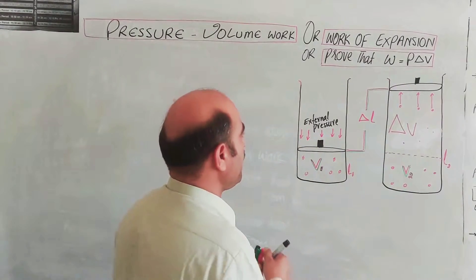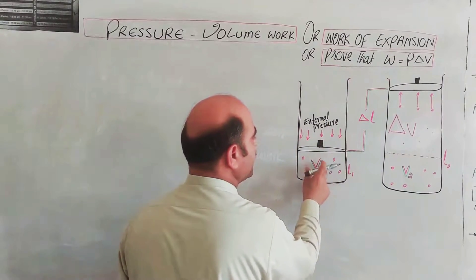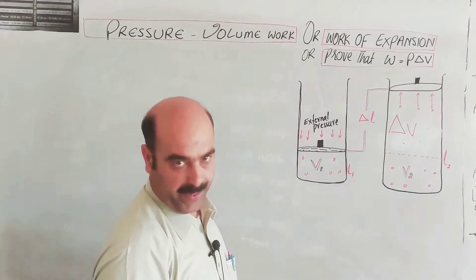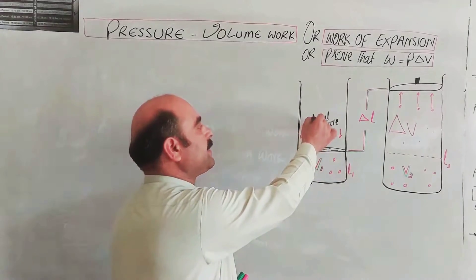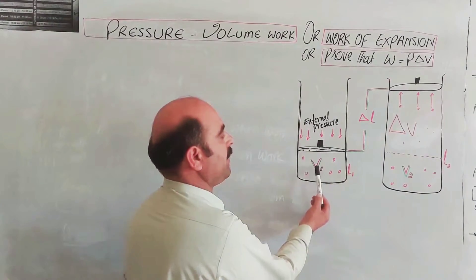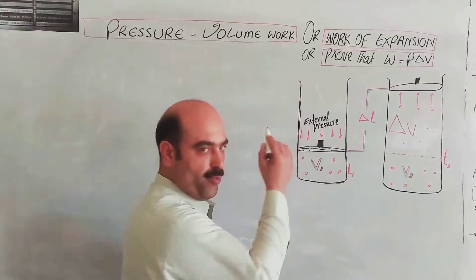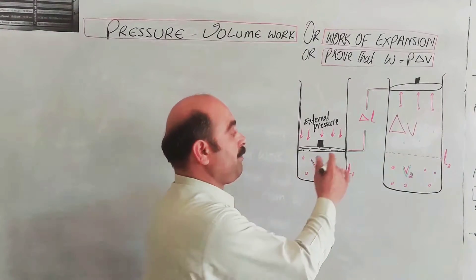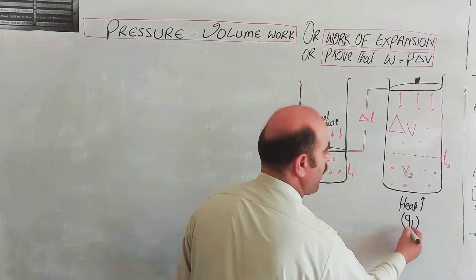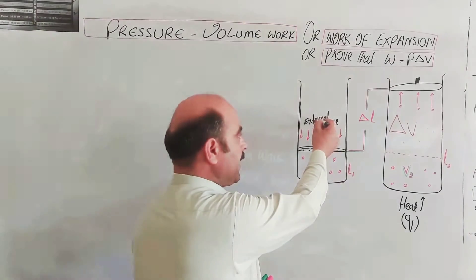Let's start. Looking at diagram number one: consider a cylinder, and inside this cylinder we have an enclosed gas. On top there is a piston — movable, light, and frictionless. The initial volume is V1. There is an external pressure — think of atmospheric pressure. The piston is at initial volume V1 and initial length L1. Now heat is supplied — an amount of heat is added to the system.